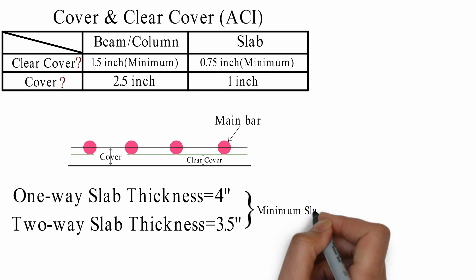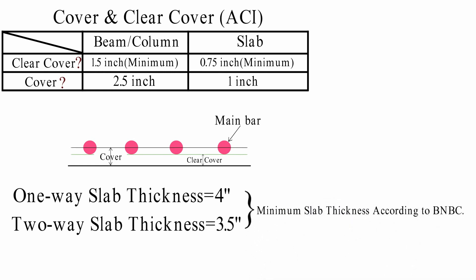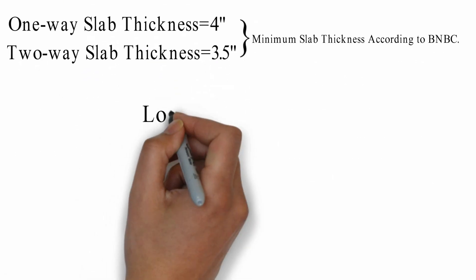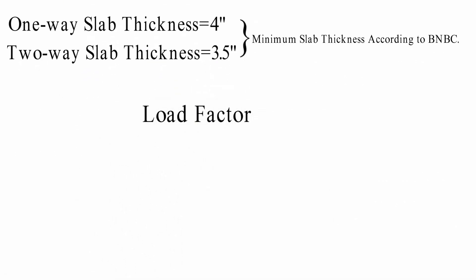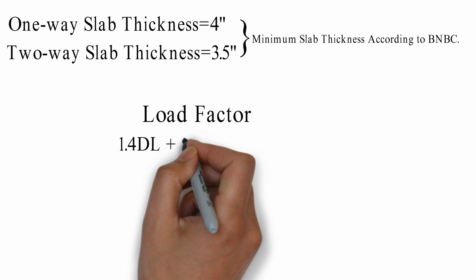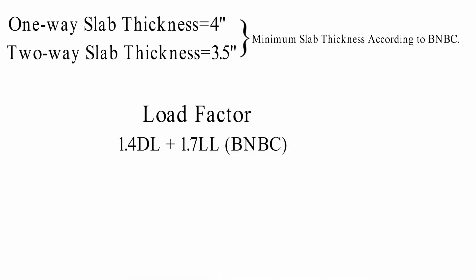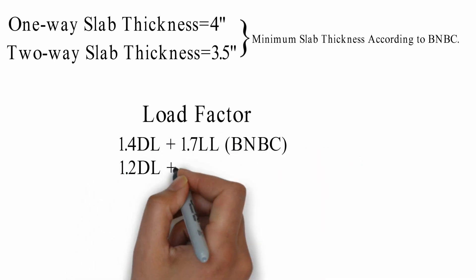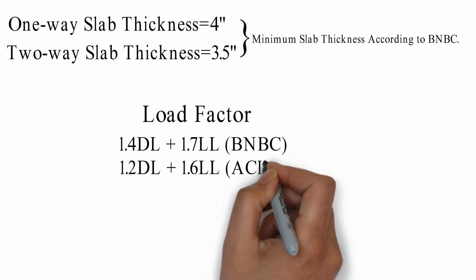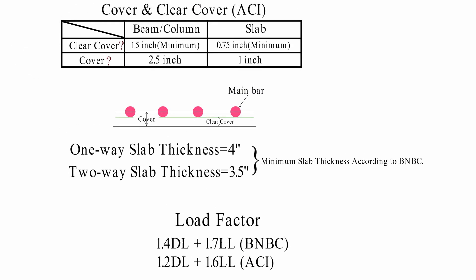Minimum slab thickness according to BNBC. Load factor per BNBC is 1.4 DL plus 1.7 LL, while ACI uses 1.2 DL plus 1.6 LL. Unit references: 2.5 inch, 2.1, and 3.5 are noted.